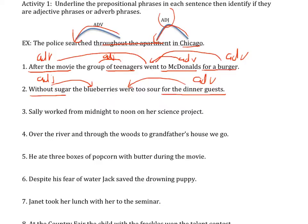Number three: Sally worked from midnight to noon on her science project. She worked 'from midnight,' she worked 'to noon,' she worked 'on' — so all three of these are adverbs.